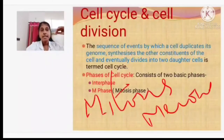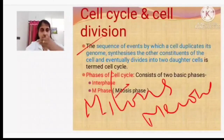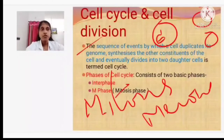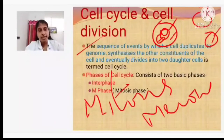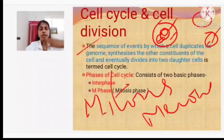The cell cycle can be defined as the sequence of events by which a cell duplicates its genome — the DNA content present — a duplicate copy is produced, and the rest of the components are synthesized. From one cell to the next, all organelles like mitochondria, endoplasmic reticulum, Golgi bodies, proteins, and DNA content are all synthesized and ready for cell division.